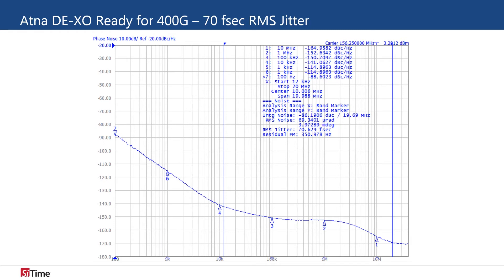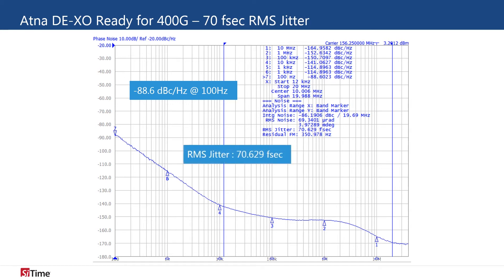The Atena differential oscillator starts with a phase noise of just minus 88.6 dBc per hertz at a 100 hertz offset and ends with a noise floor of minus 170 dBc per hertz. This tight phase noise translates to an RMS phase jitter of 70 femtoseconds at a 156.25 MHz carrier frequency. The advanced integer N PLL avoids spurs entirely.